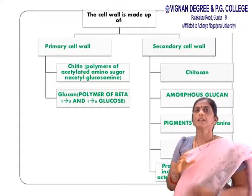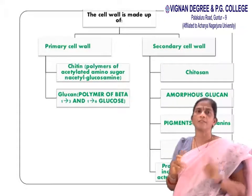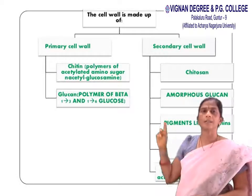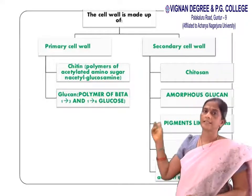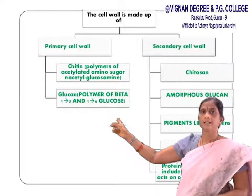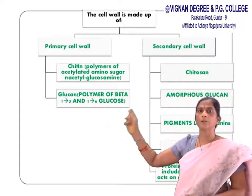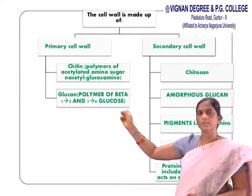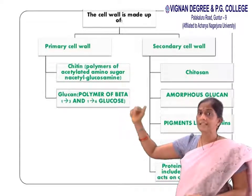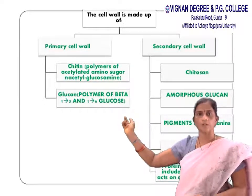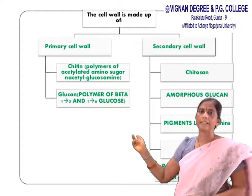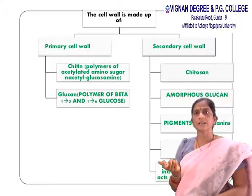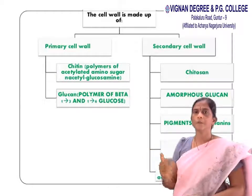Coming to cell wall composition — there are two types: primary and secondary cell wall. The primary cell wall is made up of chitin and glucan, a polymer of beta-glucose. The secondary cell wall is made up of chitosan, amorphous glucan, and pigments like melanin, lipids, proteins, and enzymes.